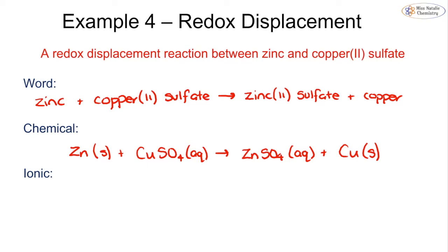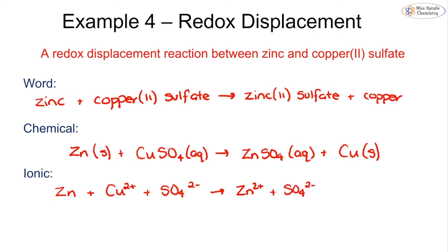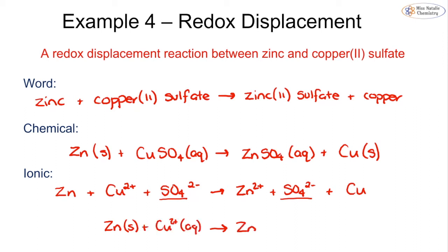Focusing on writing the ionic equation: zinc is solid so we cannot change it. Aqueous copper sulfate splits into Cu 2+ and SO4 2−. Zinc sulfate splits into Zn 2+ and SO4 2−, and copper remains as a solid metal. The spectator ion is sulfate — it appears unchanged on both sides — so we remove it. The ionic equation is: Zn(s) + Cu2+(aq) → Zn2+(aq) + Cu(s).